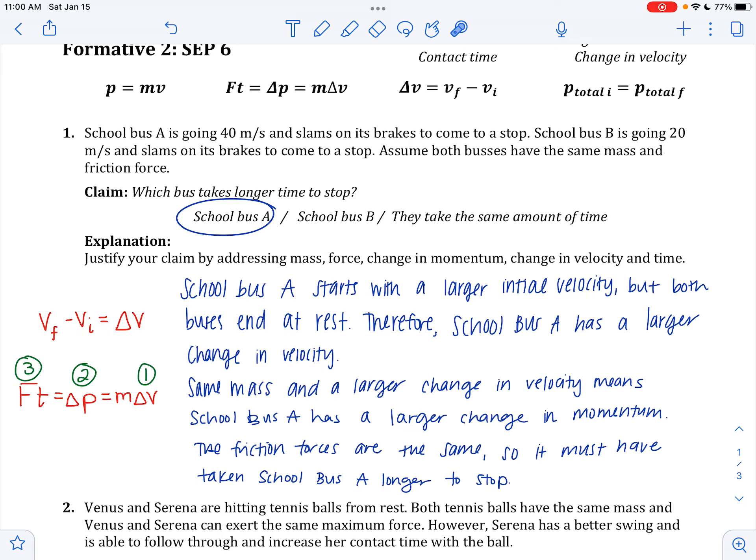And you need to write an always true statement. So for instance, if the delta P is larger, you have to talk about how the forces are the same in order for time to have to be larger, as an always true statement. Because maybe the delta P, the change in momentum, is larger, and the force is larger, and time could be the same. Or maybe the force is smaller, and time could be a lot bigger.